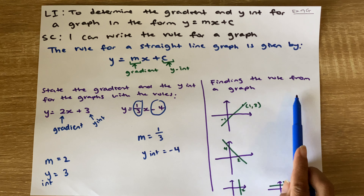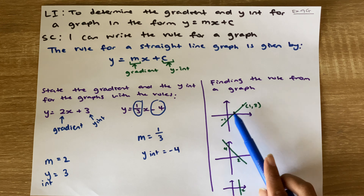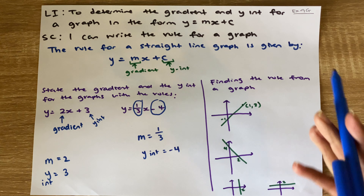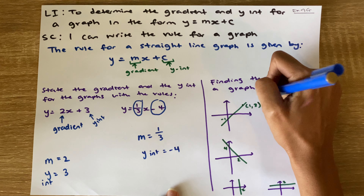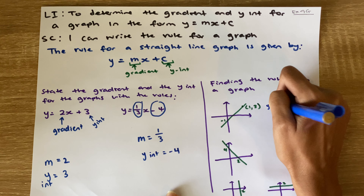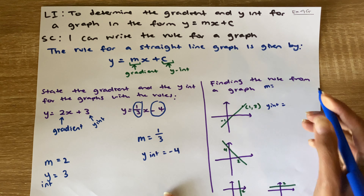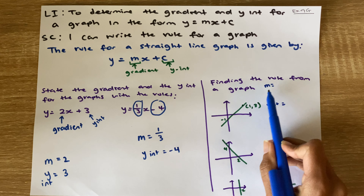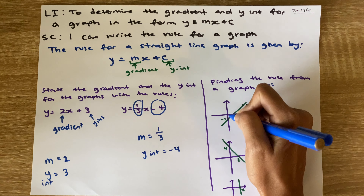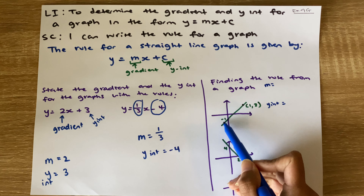Here we're looking at finding the rule from a graph. In order to find the rule from a graph, we need to figure out what our y-intercept is going to be, but we also need to figure out what our gradient is going to be. In the last lesson, we learned how to figure out this m value — remember, to figure out m we take two points on the graph.